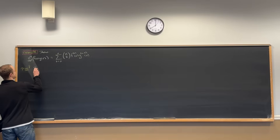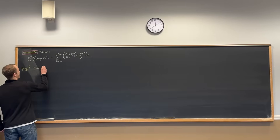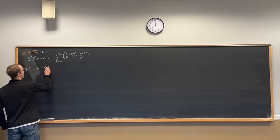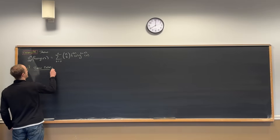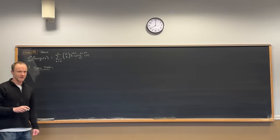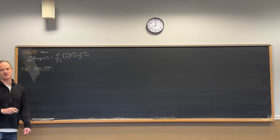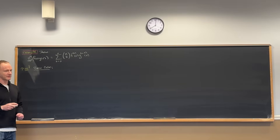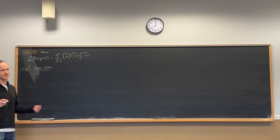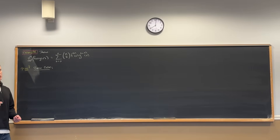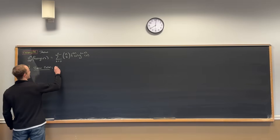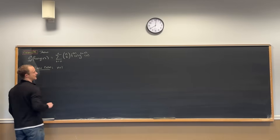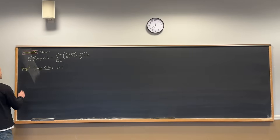We're going to do it by induction, which means we need a base case. The zeroth derivative could be the base case here — that's just the identity operator — but it's not super interesting, so we'll do a bigger base case. Let's take the case when n is equal to 1, the first derivative.